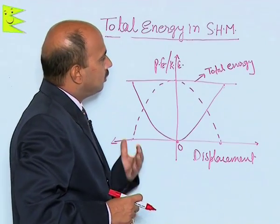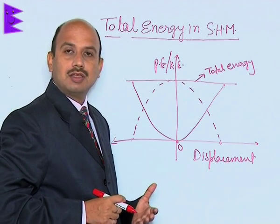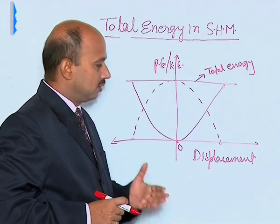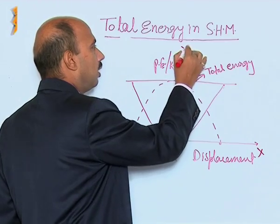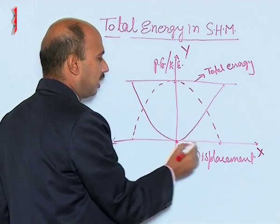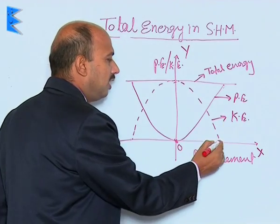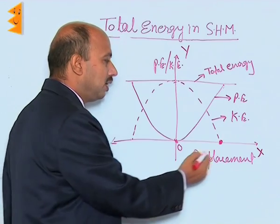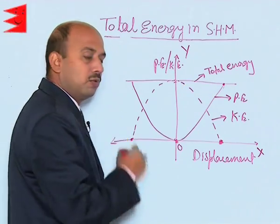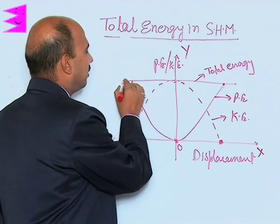We can also see the variation of potential energy and kinetic energy with displacement. On the x-axis is displacement and on the y-axis are potential energy and kinetic energy. When the particle is at mean position, potential energy is 0 but kinetic energy is maximum. When the particle is at extreme position (maximum displacement, i.e., amplitude), kinetic energy is 0 and potential energy is maximum. The solid line represents potential energy and the dotted line represents kinetic energy. Similarly, at the extreme position on the other side, kinetic energy is 0 and potential energy is maximum, but total energy remains constant.